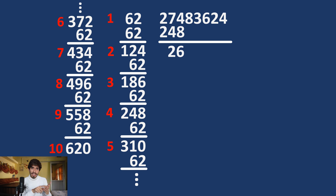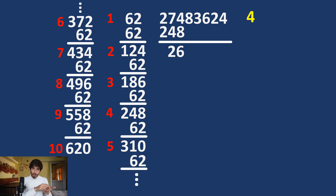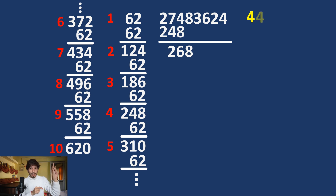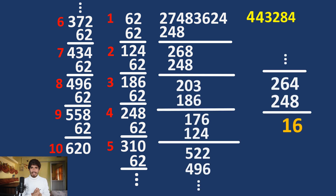As the next step, similar to traditional division, we find the number we can subtract. Looking at 274, we find 248 in the divisor table, write 248, subtract, and write the marked number — which is 4 — in our quotient. We now have 26, bring down the 8 to get 268, look at the divisor table again, find 248, write 4, and subtract to get 20. We continue like this and get our answer, with a remainder of 16.